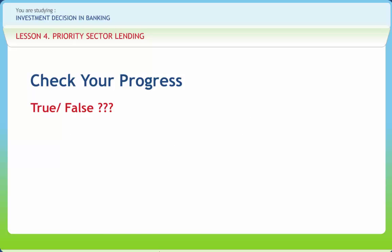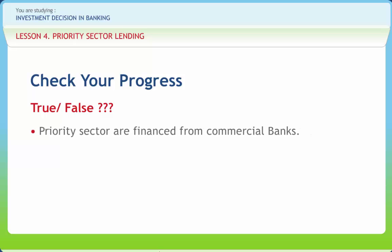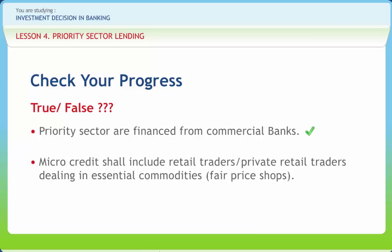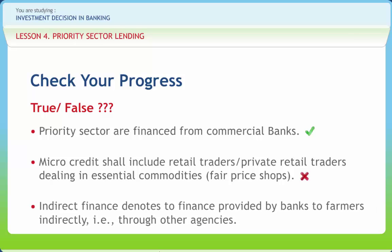Now let's see how much you have learned. State whether the following statements are true or false. Priority sector is financed from commercial banks — True. Micro-credit shall include retail traders or private retail traders dealing in essential commodities, fair price shops — False. Indirect finance denotes finance provided by banks to farmers indirectly, i.e., through other agencies — True.